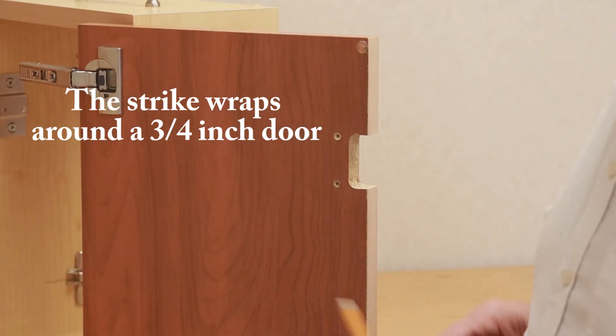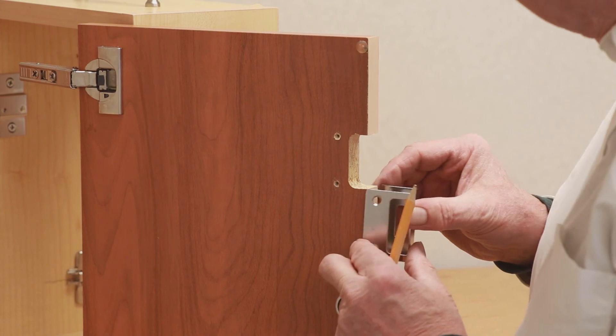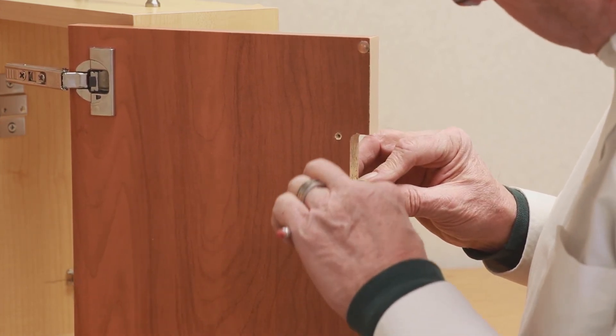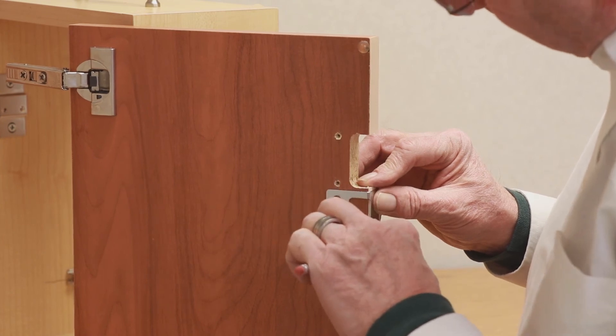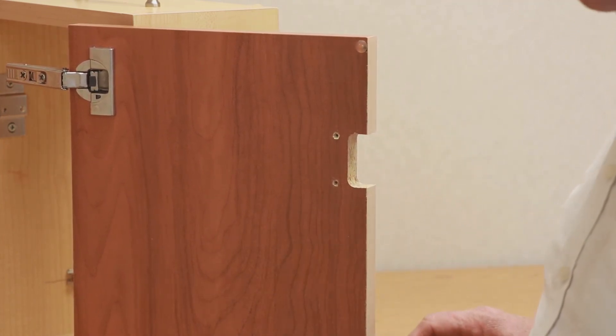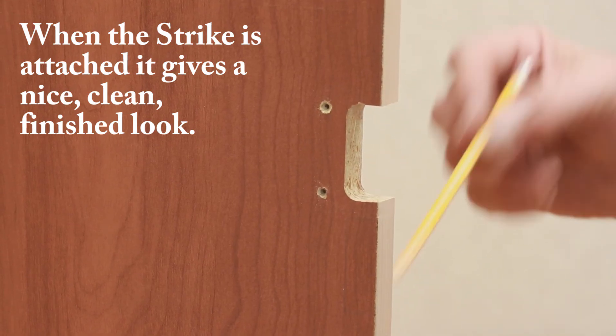How you determine the machining on the door is to put the strike over the edge of the door, and you draw around here, and that tells you where you need to machine in order to make this work. Once this area is machined,